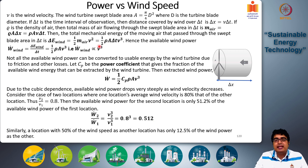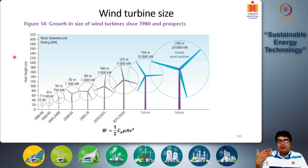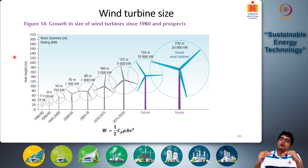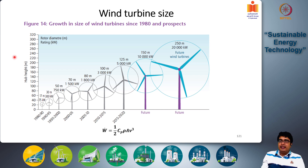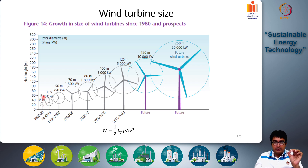The swept area A also matters greatly: increasing the swept area increases net available power proportionally. This has driven a general trend over the last 20-30 years of wind turbines growing bigger and taller, since wind speeds increase with altitude. In the 1980s, the average turbine diameter was 17 meters with an average power output of 75 kilowatts per turbine.